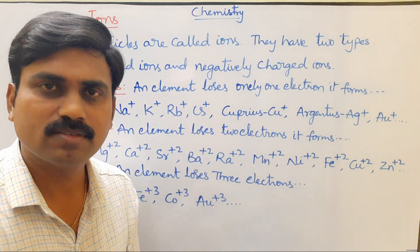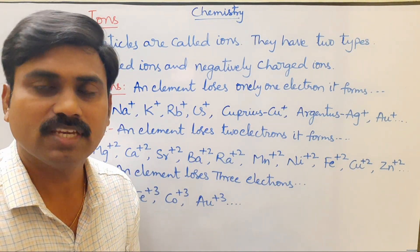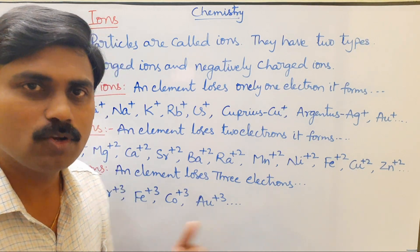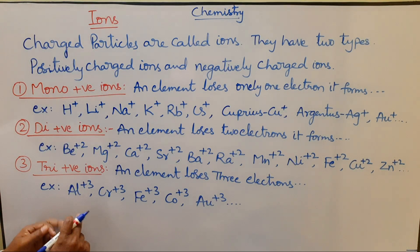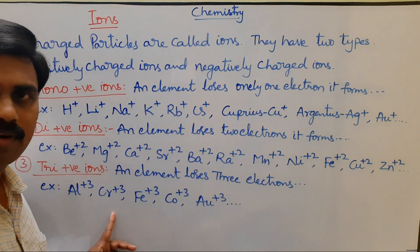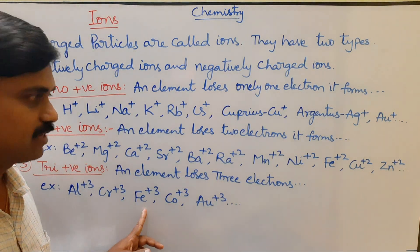Third: tri-positively charged ions. When an element loses three electrons, it forms tri-positively charged ions. Examples: aluminum Al³⁺, chromium Cr³⁺, and ferric ion Fe³⁺.